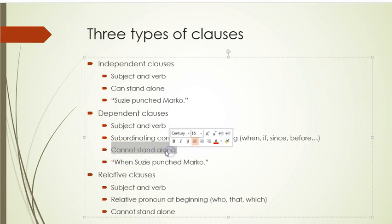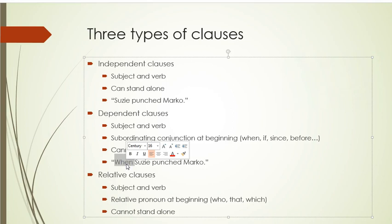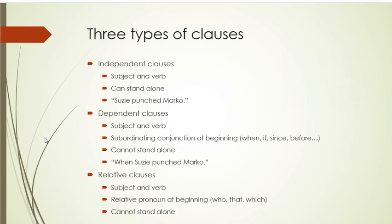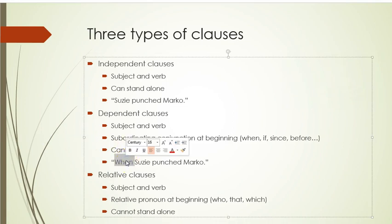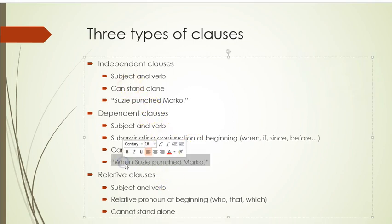Dependent clauses cannot stand alone. 'Susie punched Marco' works, but right when I add the word 'when,' most of you can see it can't stand alone. If you take the word 'when' off, it could work as a sentence. You can add an independent clause to it if you want to, but you don't necessarily need to. Dependent clauses have subjects and verbs, and then they have something extra — a subordinating conjunction. Because they have something extra, they can't stand alone.